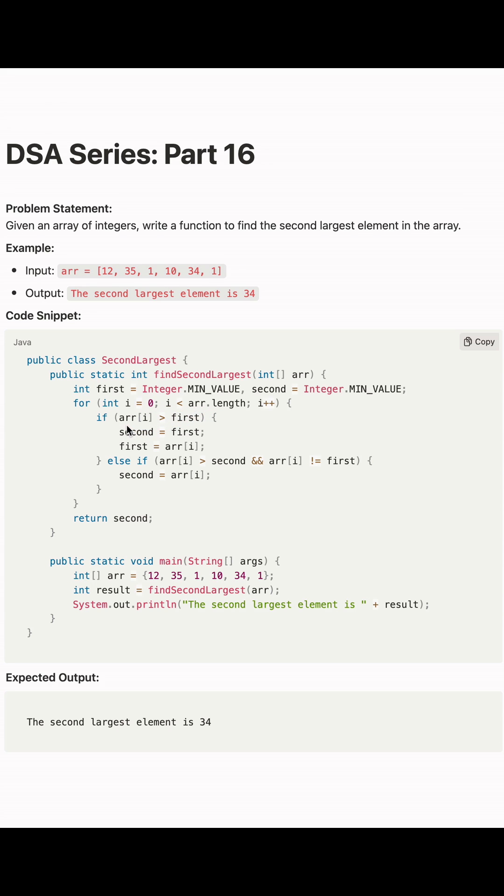First, we're checking if the current index element is greater than first. If so, we're updating second to first and first to the current element. Next, we're checking if the current element is greater than second and if it's not equal to first, then only we update second to the current element.